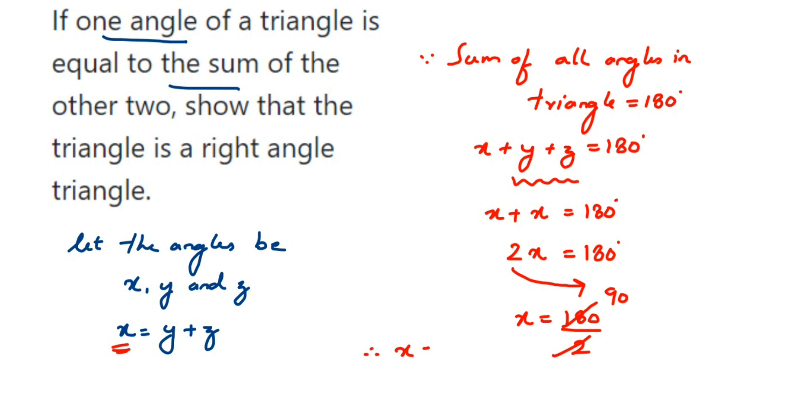So you can see that out of 3 angles, I got one angle as 90 degrees. So if one angle is 90 degrees, we can say that the triangle is a right angle triangle. Therefore, the triangle is a right angle triangle.